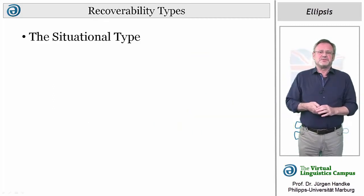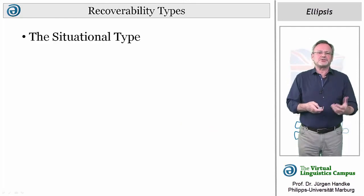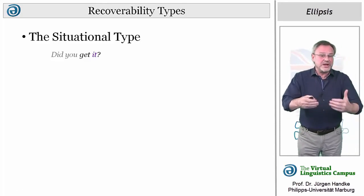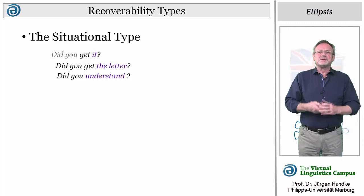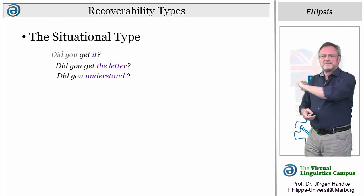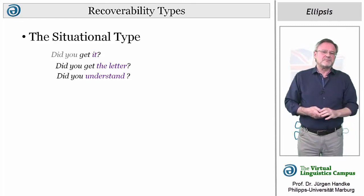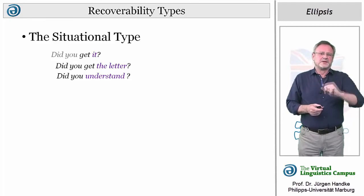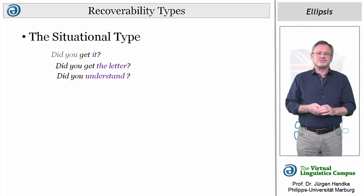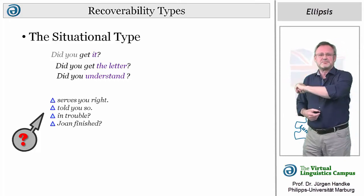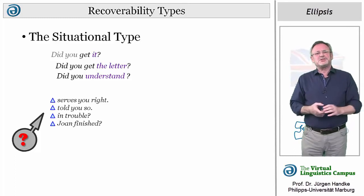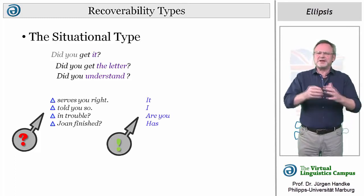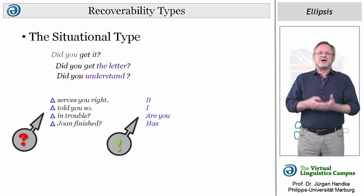In situational ellipsis, the interpretation depends on knowledge about some extra-linguistic context. For example, 'Get it,' a short form for 'Did you get it,' may be substitutional for sentences like 'Did you get the letter?' or can be interpreted as 'Did you understand?' In this example, situational ellipsis is final. However, usually it tends to be initial, especially taking the form of omitting the subject, the operator, or both. It occurs in declarative as well as in interrogative sentences. Here are some examples: 'Serves you right?' 'Told you so?' 'In trouble?' 'Joan finished?' Situational ellipsis often applies to cases where it is quite clear what has been omitted and where the omitted words have weak stress and low pitch.